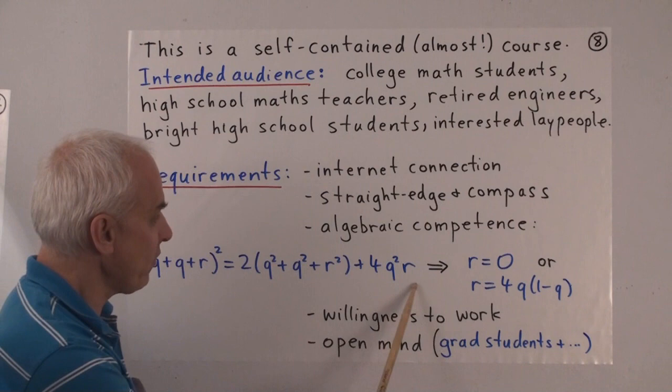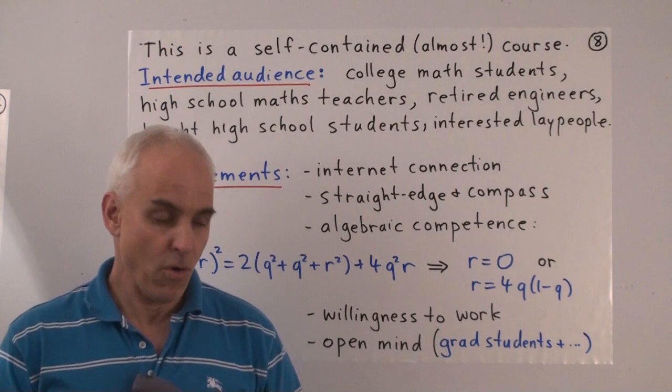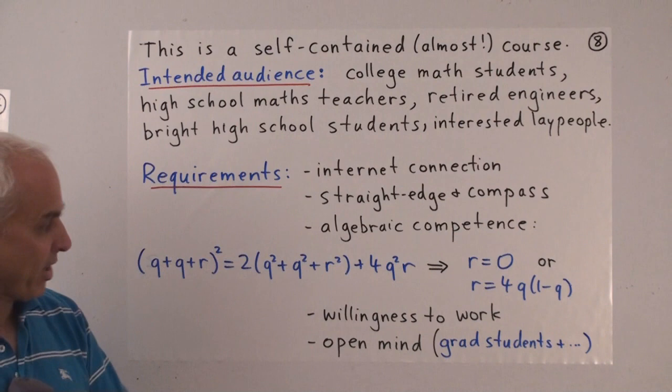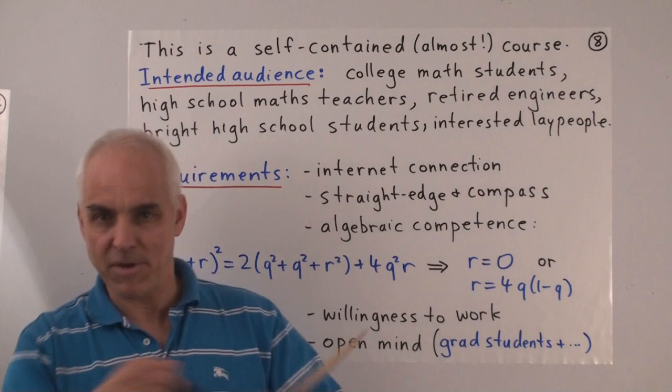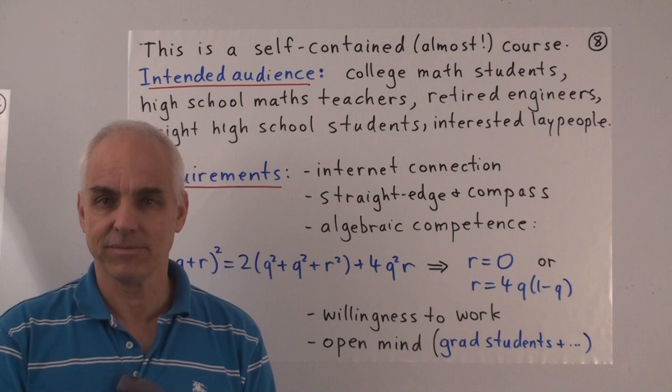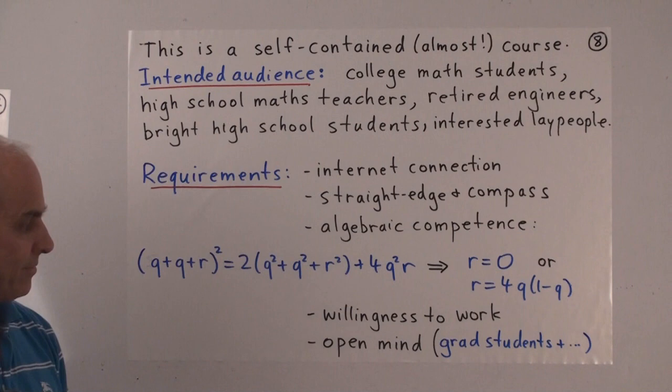So we're going to start from an elementary level and we're going to work slowly and methodically. And it's never going to get too complicated. The intended audience is, well, college math students, certainly, high school math teachers, retired engineers or scientists or other people who are otherwise somewhat mathematically inclined. Bright high school students will be able to follow it. And otherwise generally interested lay people who have an ability for mathematics or an interest in it. What do you need? Well, you're going to need an internet connection. You'll need a straight edge and a compass, because it's going to be fun and useful to make actual explicit diagrams to verify statements, to illustrate a lot of the theorems. You are going to require a certain amount of algebraic competence.